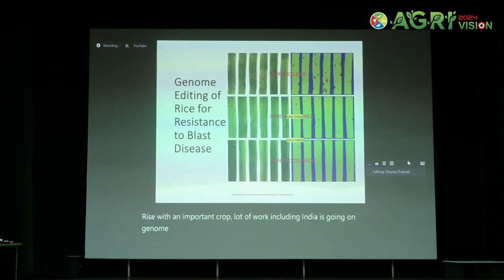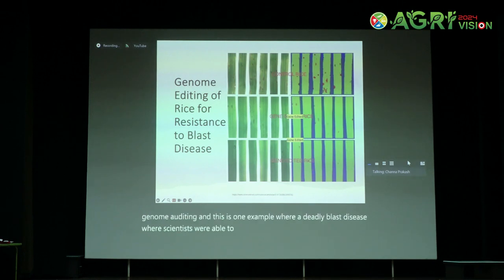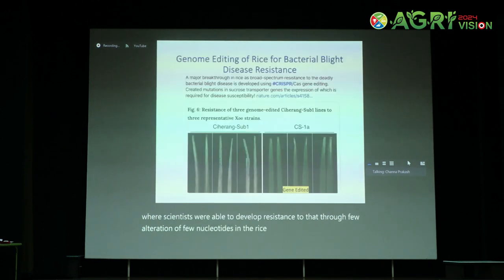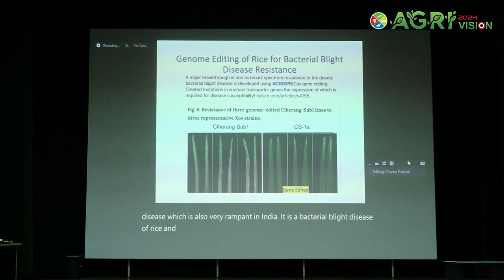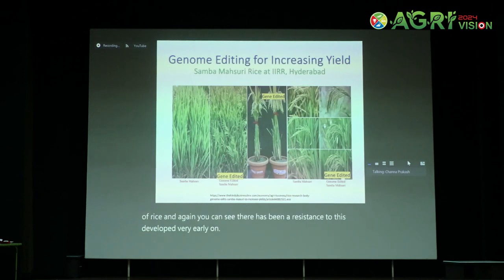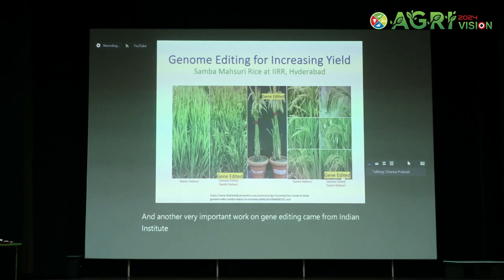This is one example where scientists were able to develop resistance to the deadly blast disease through alteration of just a few nucleotides in the rice genome. There is another disease which is also very rampant in India — bacterial blight disease of rice — and resistance to this has also been developed very early on.